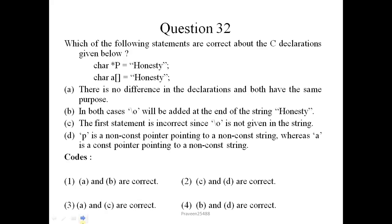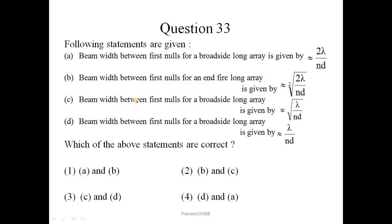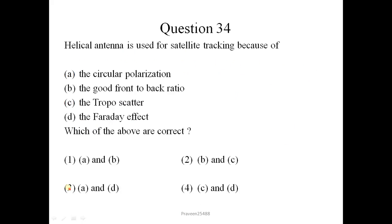Question number 32. Which of the following statements are correct about the C declarations given below? Character asterisk P equals honest T, character A equals honest T. Following statements are given. We have to find the correct statement. Question 33: Beam width between first nulls for a broadside long array is given by. Question number 34: Helical antenna is used for satellite tracking because of - we know the helical antenna has circular polarization, so this is correct. The good front to back ratio is not correct. The troposcatter is also not correct. The Faraday effect is correct. So correct option is A and D, option number 3.